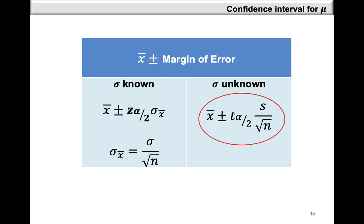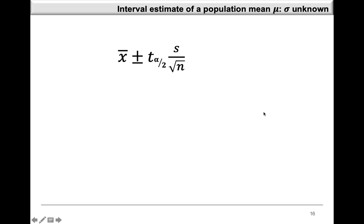Now we're going to look at the second case where sigma is unknown to us. This means that we're going to have to make use of a sample estimate in place of sigma. So our interval estimate will be x-bar plus or minus a t value — a critical value from the t-distribution — multiplied by s, which is the estimate for sigma, divided by the square root of n. This estimate comes from our sample; s is the sample standard deviation.